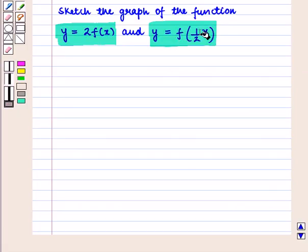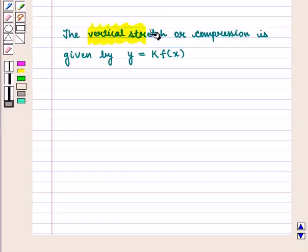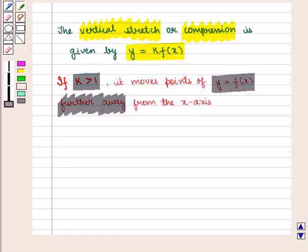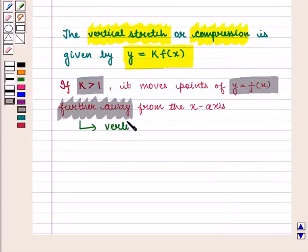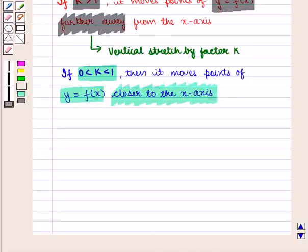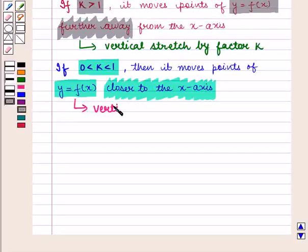We know that the vertical stretch or compression is given by y = k·f(x). If k > 1, it moves points of y = f(x) further away from the x-axis — this is called vertical stretch by factor k. If 0 < k < 1, then it moves points of y = f(x) closer to the x-axis — this is called vertical compression by factor k.